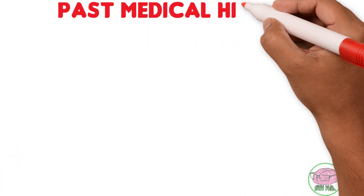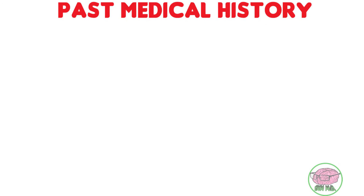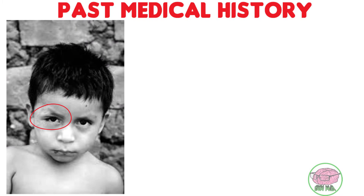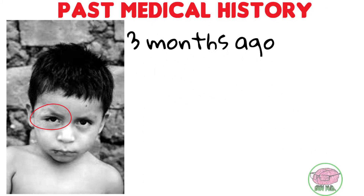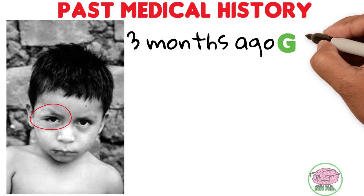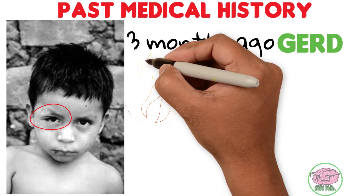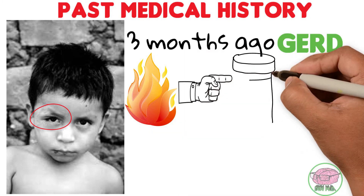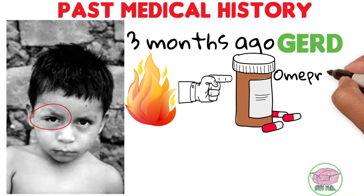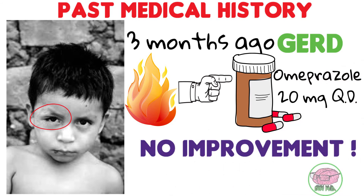Regarding his past medical history, he says he had some allergic problems as a child, and one time he presented with swollen eyelids, but that has never happened again. He was diagnosed with gastroesophageal reflux disease three months ago due to the heartburn sensation and was given omeprazole 20 milligrams each day for eight weeks. However, it has not alleviated the heartburn sensation at all.